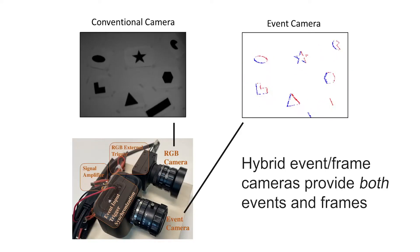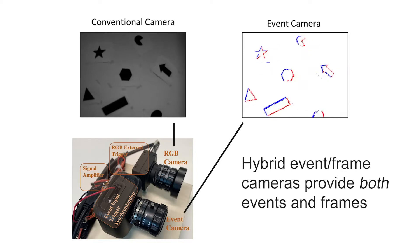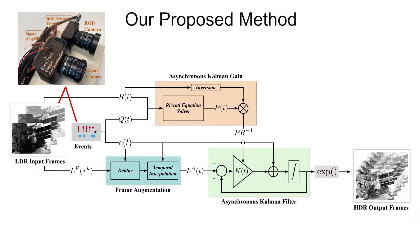Hybrid event frame cameras provide parallel streams of both events and image frames. We propose to combine frames and events from a hybrid camera to recover high dynamic range, high temporal resolution, sharp video footage.